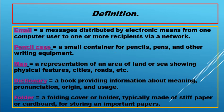Next, map. A representation of an area of land, or sea, showing physical pictures, city, roads, and so on. So when we say representation, it means a copy — a copy or an image of an area of land. So the land, of course, is the one you can see in the map: how big it is, or the sea, the water.